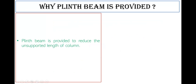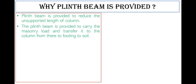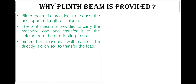First, a plinth beam is provided to reduce the unsupported length of the column — this is the first and foremost point all engineers should understand. The second point is that the plinth beam is provided to carry the masonry load and transfer it to the column, from there to the footing, and from there to the soil. Since the masonry wall cannot be laid directly on the soil, we provide the plinth beam to carry that load.